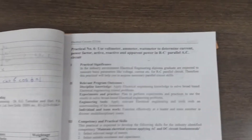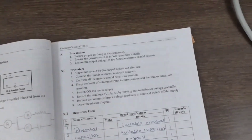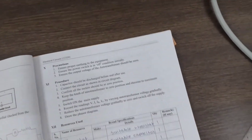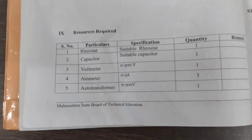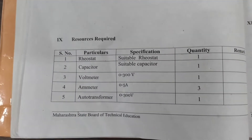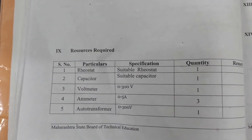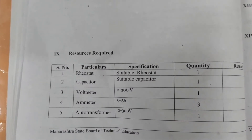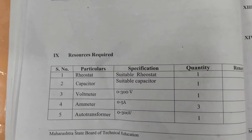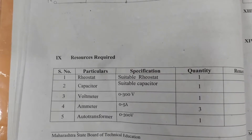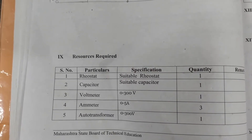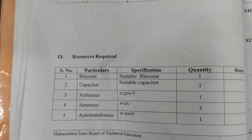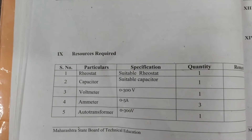Now we will see what resources are required to perform this practical. First, rheostat. In this practical we can use a lamp as a resistive load, then capacitor, voltmeter, ammeter, and autotransformer.